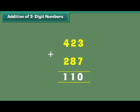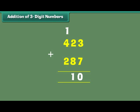1 plus 2 plus 8 is equal to 11. Write 1 at the 10s place and carry over 1 to the 100s place. The digits at the 100s place are 1, 4 and 2. 1 plus 4 plus 2 is equal to 7. Therefore, 423 plus 287 is equal to 710.